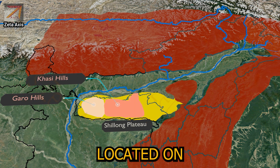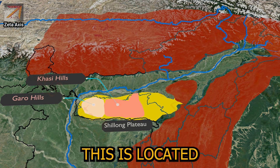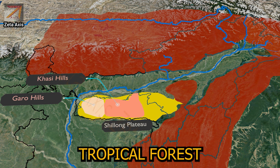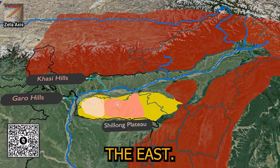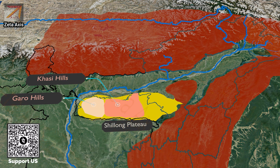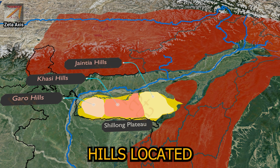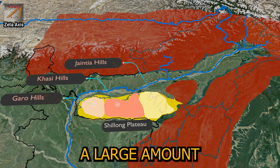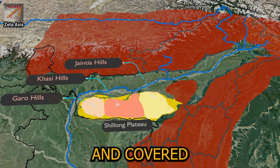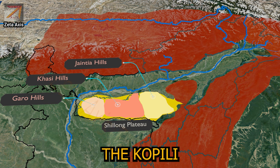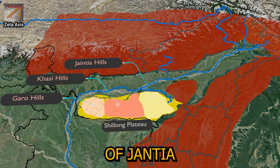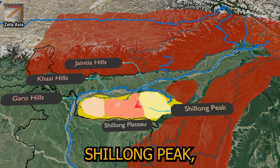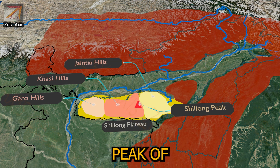Next are the Khasi hills, located on the Shillong Plateau between the Garo hills and the Jaintia hills. The whole region is covered with tropical forest and is called the Scotland of the East. The Jaintia hills form the easternmost part of the Meghalaya Plateau, receiving a large amount of rainfall and covered by evergreen forests. The Kopili river flows from the west of Jaintia hills. In between the Khasi hills and Jaintia hills, we find Shillong Peak, which is the highest peak of the Shillong Plateau.